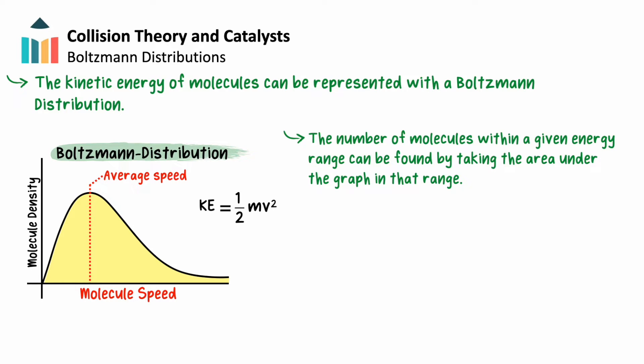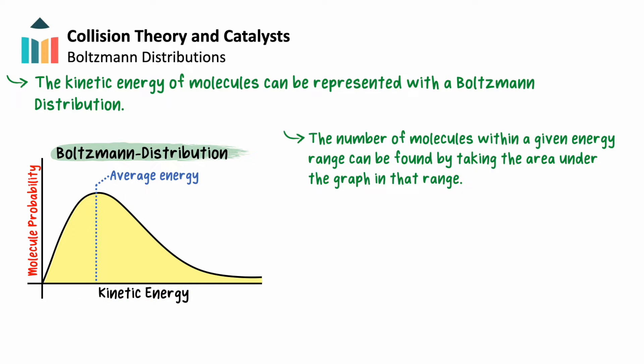The y-axis may show the proportion or probability of molecules displaying a given energy value rather than number density. Finding the area under the graph will now tell you the fraction or percentage of molecules within that range of energies.